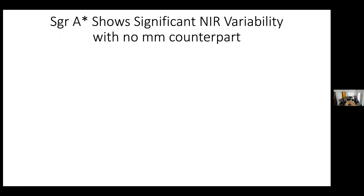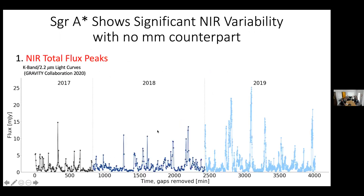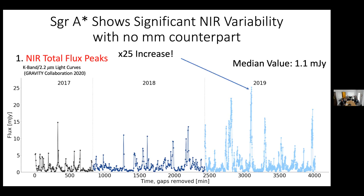Sagittarius A-star, sometimes called Sag A-star, is not completely dark — we see emission around this object. We can measure it in the infrared and millimeter. In the infrared, we find fairly significant flux peaks. The median value is 1.1 millijanskys, from the GRAVITY collaboration. These light curves show incredibly sharp peaks over observations several hours long — the biggest is about 25 times the median value. This raises the question: is there some intrinsic variability causing these peaks?